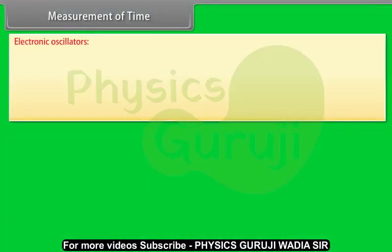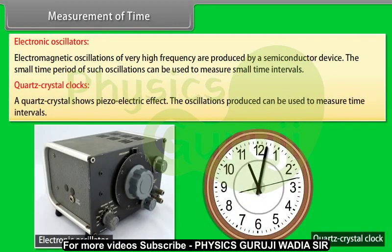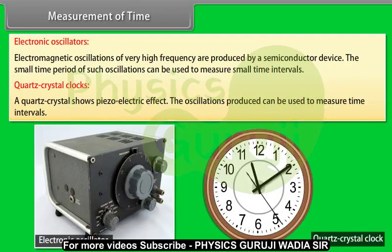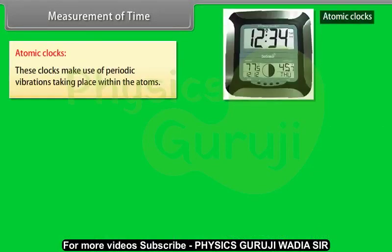Electronic oscillators: Electromagnetic oscillations of very high frequency are produced by a semiconductor device. The small time period of such oscillations can be used to measure small time intervals. Quartz crystal clocks: A quartz crystal shows piezoelectric effect. The oscillations produced can be used to measure time intervals.